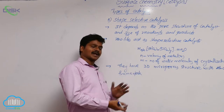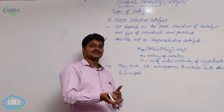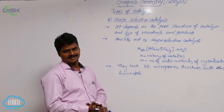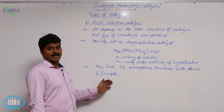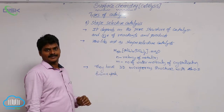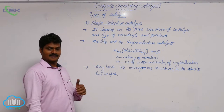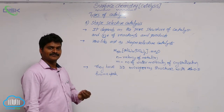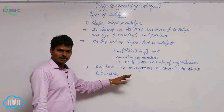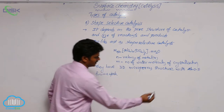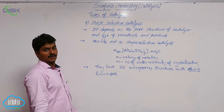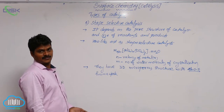Some of the silicon atoms in zeolites are replaced by aluminum atoms. That's why zeolites have an aluminum-oxygen-silicon network.